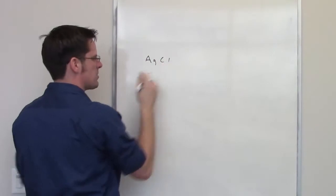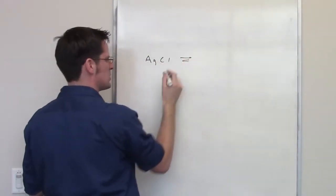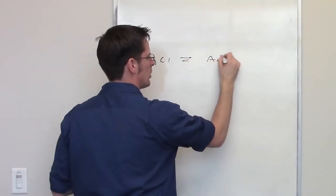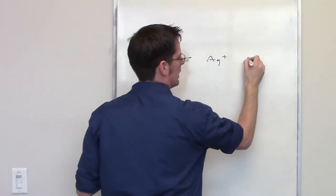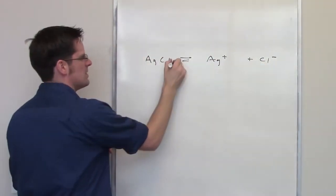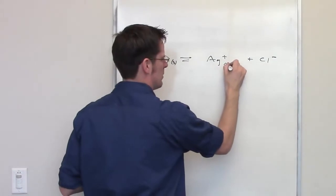So I've got silver chloride thrown into a bucket of water. It's going to dissociate in some way to give off one molar equivalent of silver cation, one molar equivalent of chloride anion. This is a solid, of course. These guys are aqueous species.